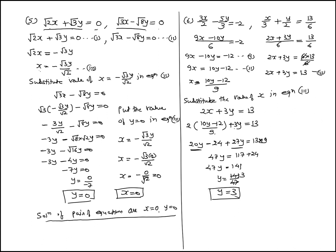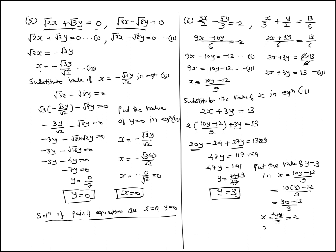Therefore y equal to 141 upon 47, which gives y equal to 3. We have found y equal to 3. Now put the value y equal to 3 in x equal to (10y minus 12) upon 9: x equal to (10 into 3 minus 12) upon 9 equal to (30 minus 12) upon 9 equal to 18 upon 9, therefore x equal to 2. The solution of the pair of equations is x equal to 2 and y equal to 3.